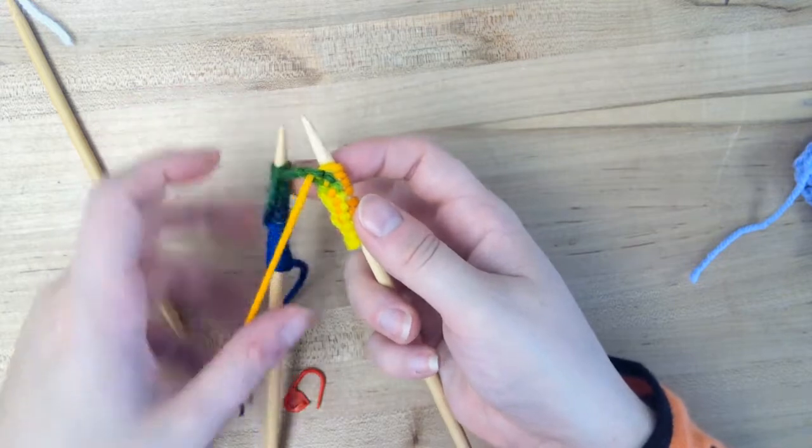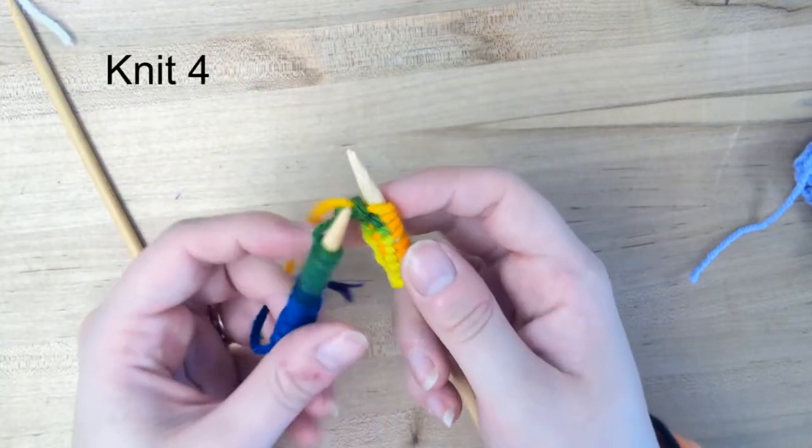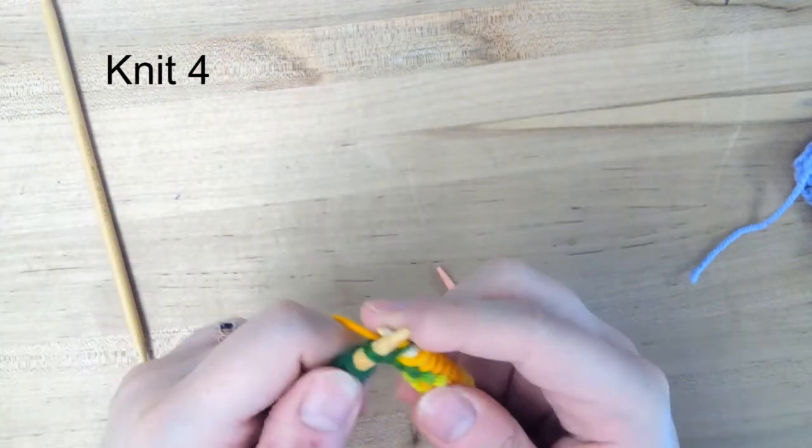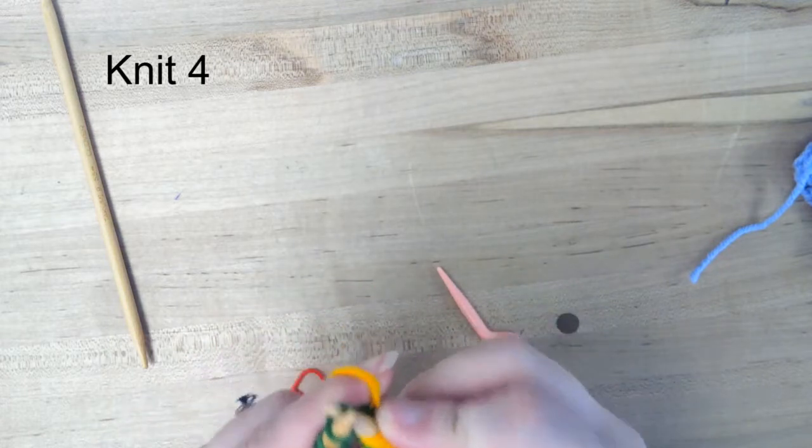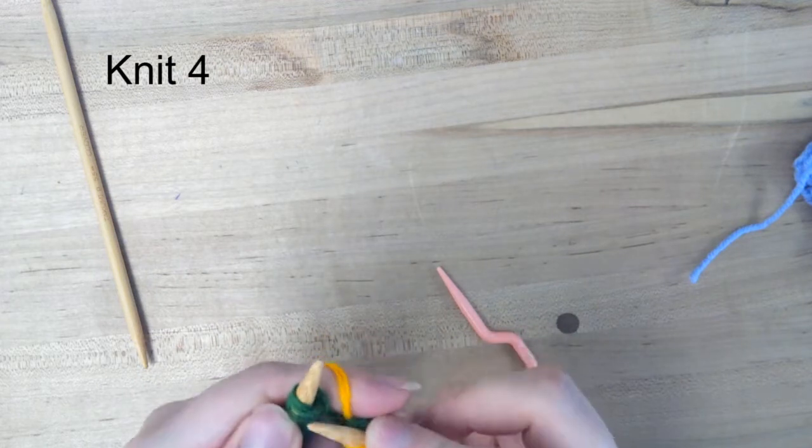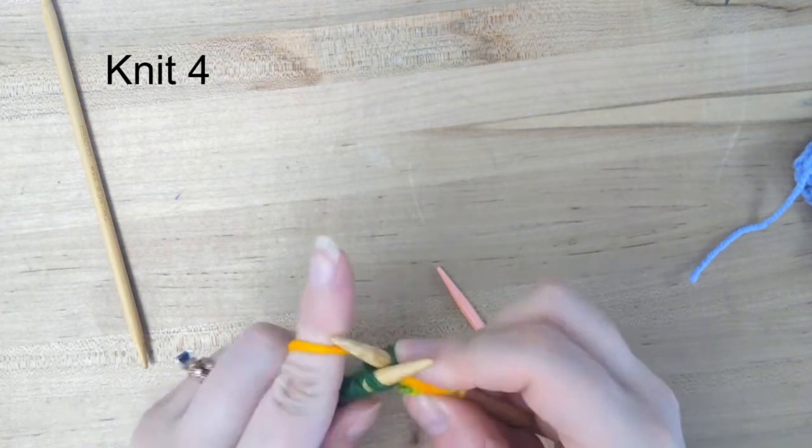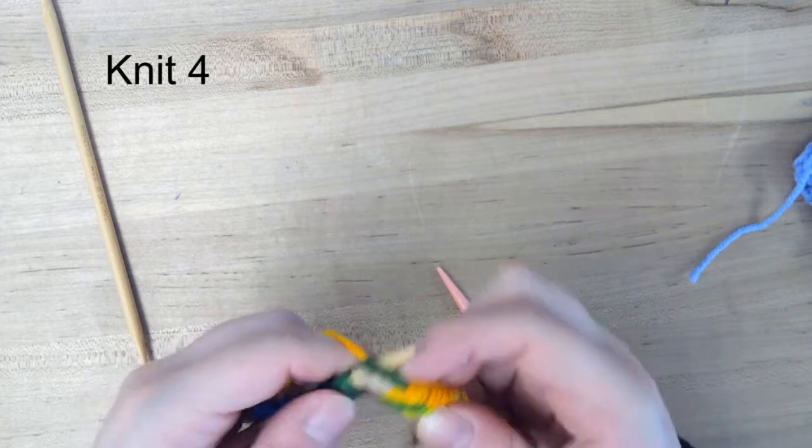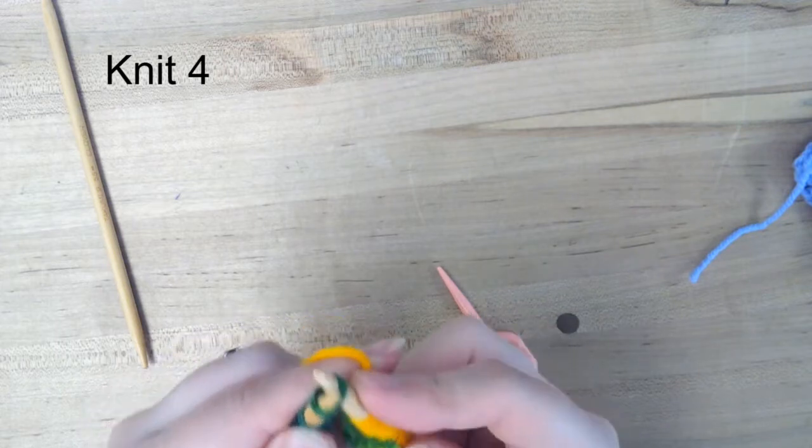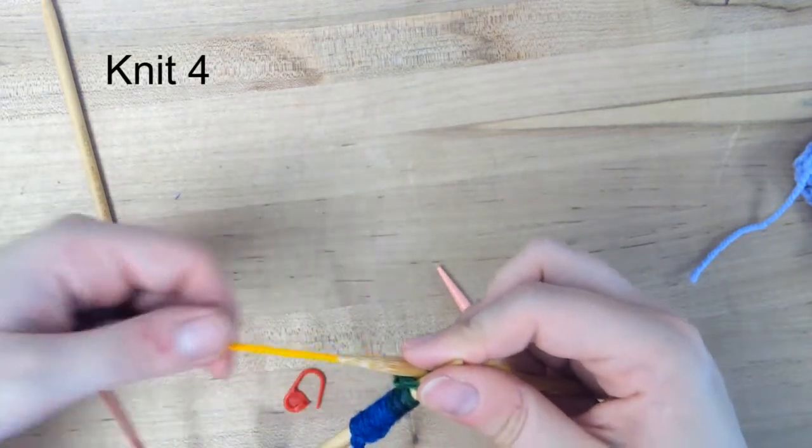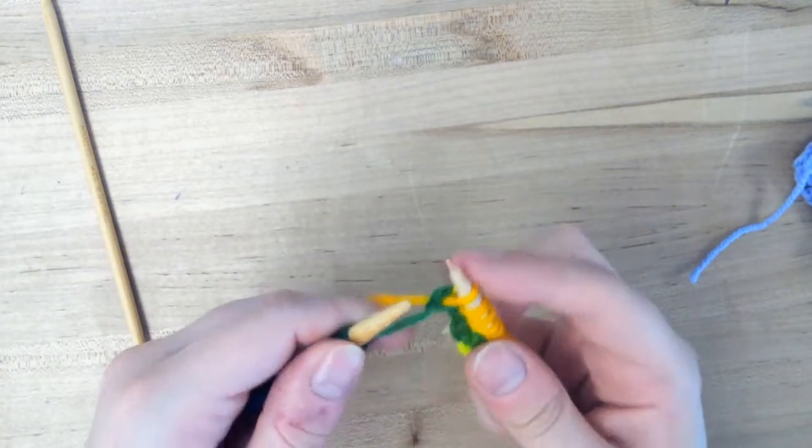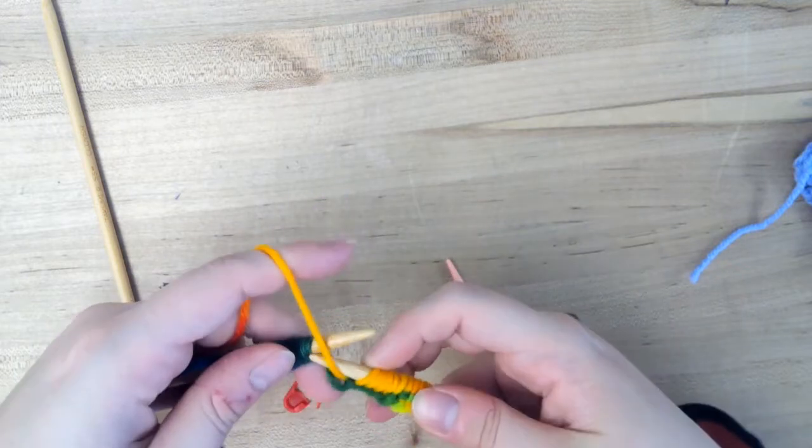Now that we've got our nine done, we're going to move our yarn to the back, and we're going to knit four. One, two, three, four. And remember, knitting is just putting your needle in, yarn over, pulling that through, and dropping it off. Now we're going to purl the next nine.